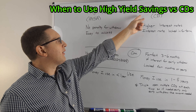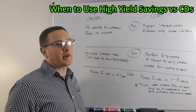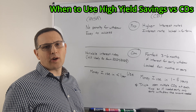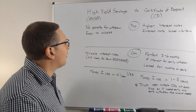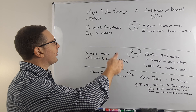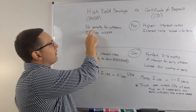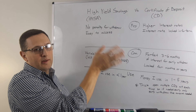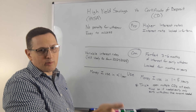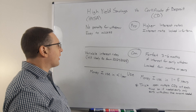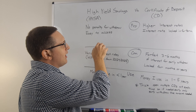So what do you use high-yield savings accounts for, and what do you use certificates of deposits — otherwise known as CDs? High-yield savings generally has no penalty for withdrawal. You can withdraw anytime you want, so it's easy to access.